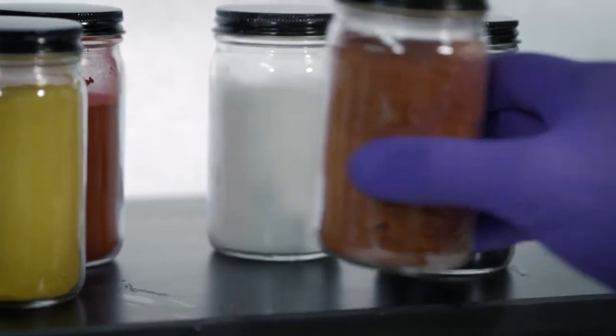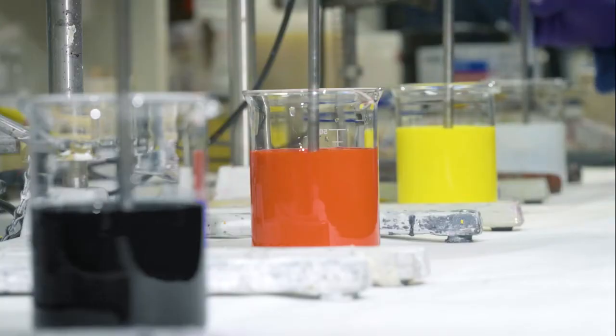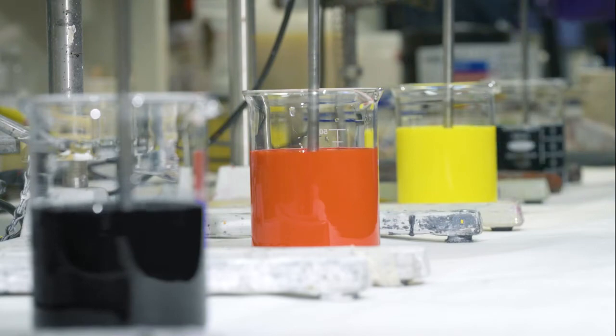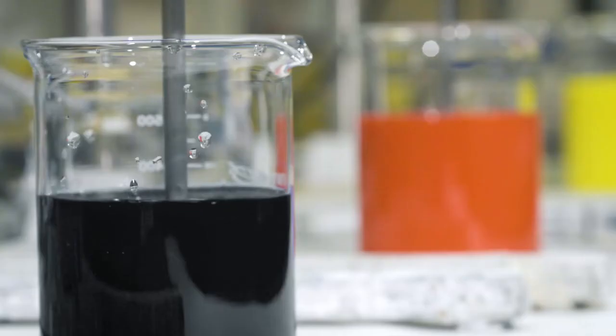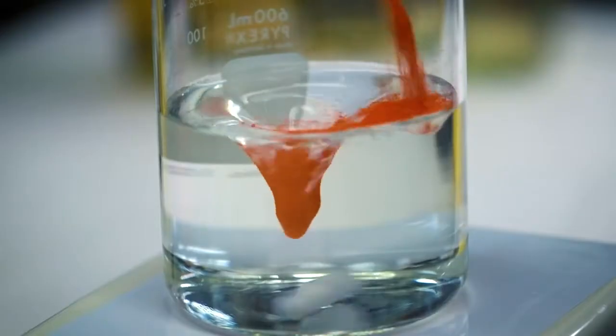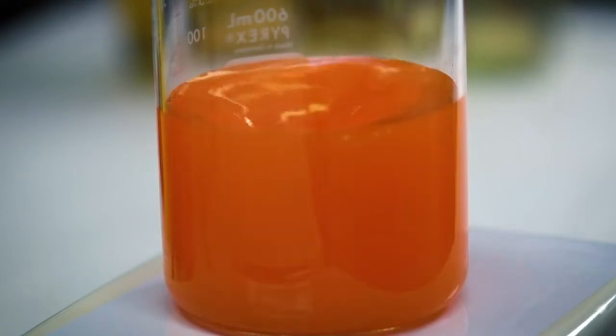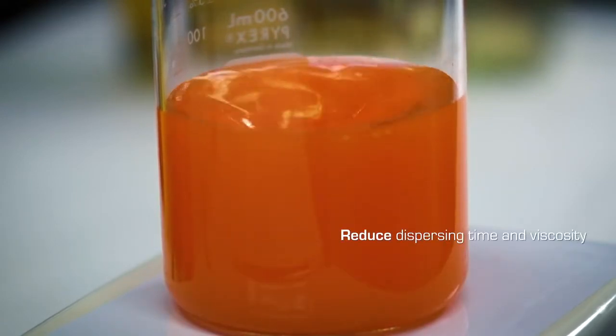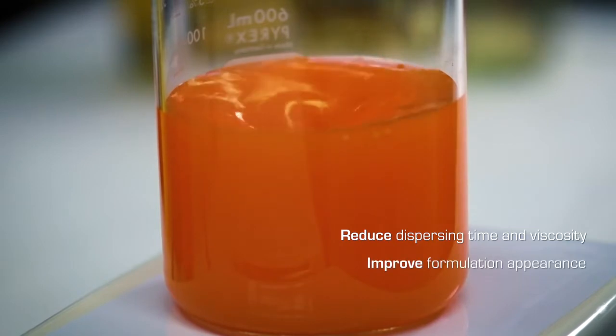The role of a dispersant is twofold: to absorb onto the pigment surface and to prevent flocculation of the pigment particle during dispersion, resulting in a stable pigment dispersion during both formulation and final appearance. Dispersants provide several key benefits, such as reducing dispersing time and viscosity, improving appearance, and enhancing final coverage properties.